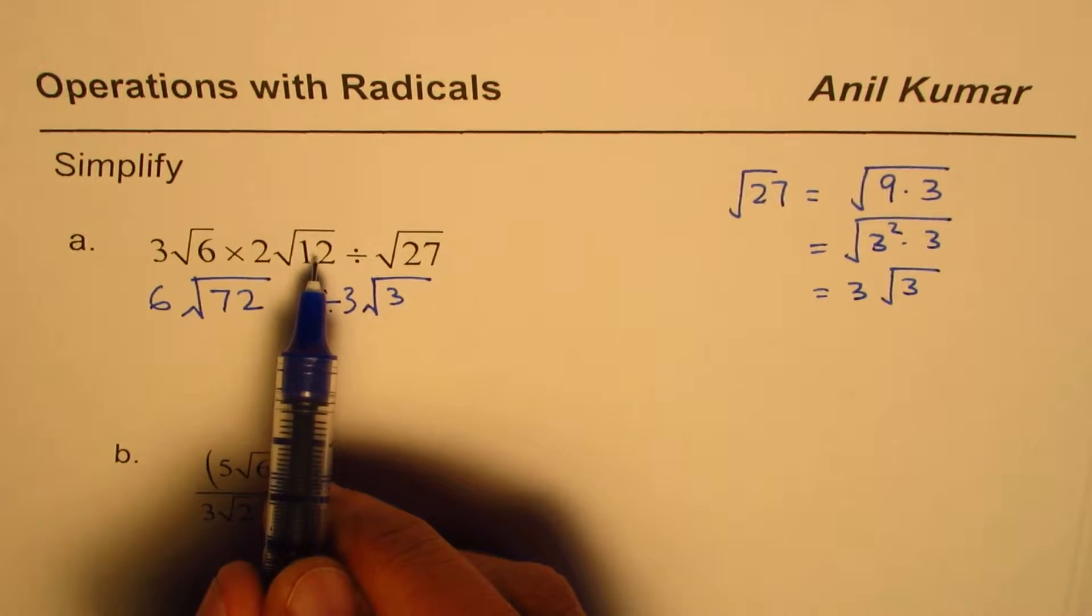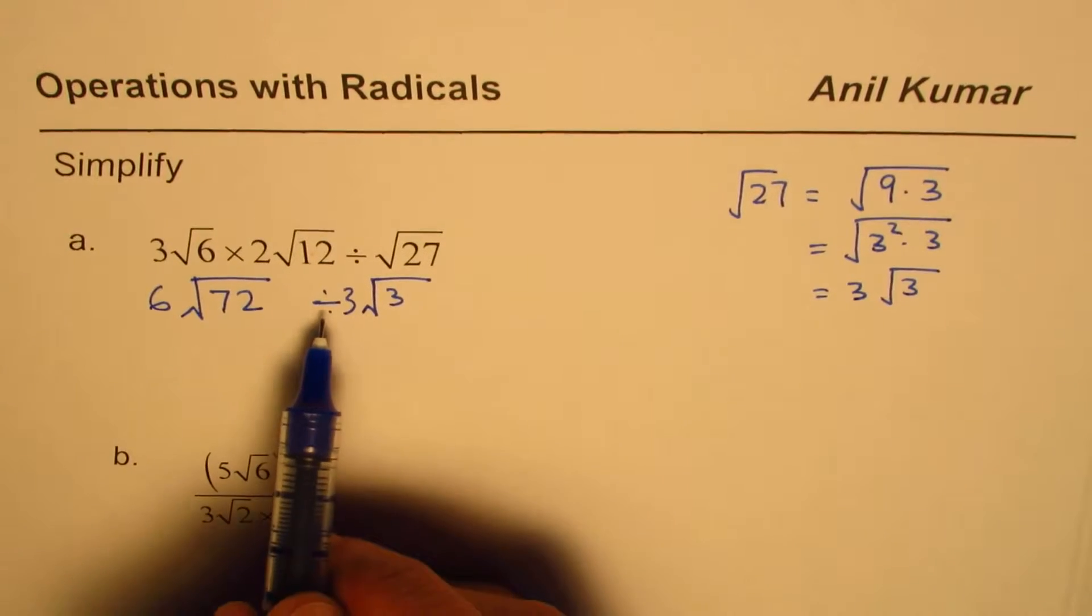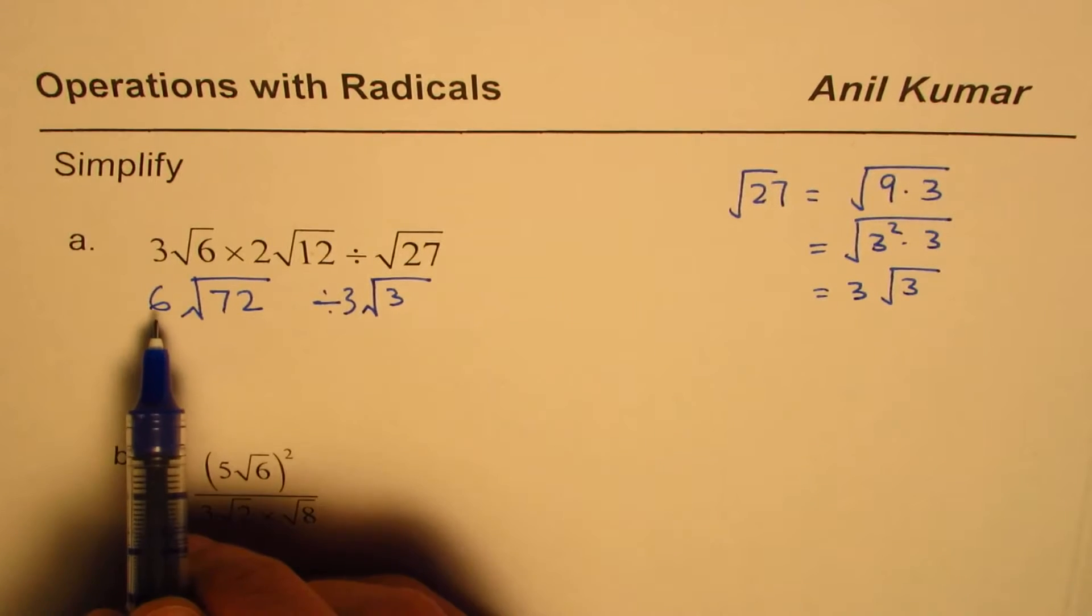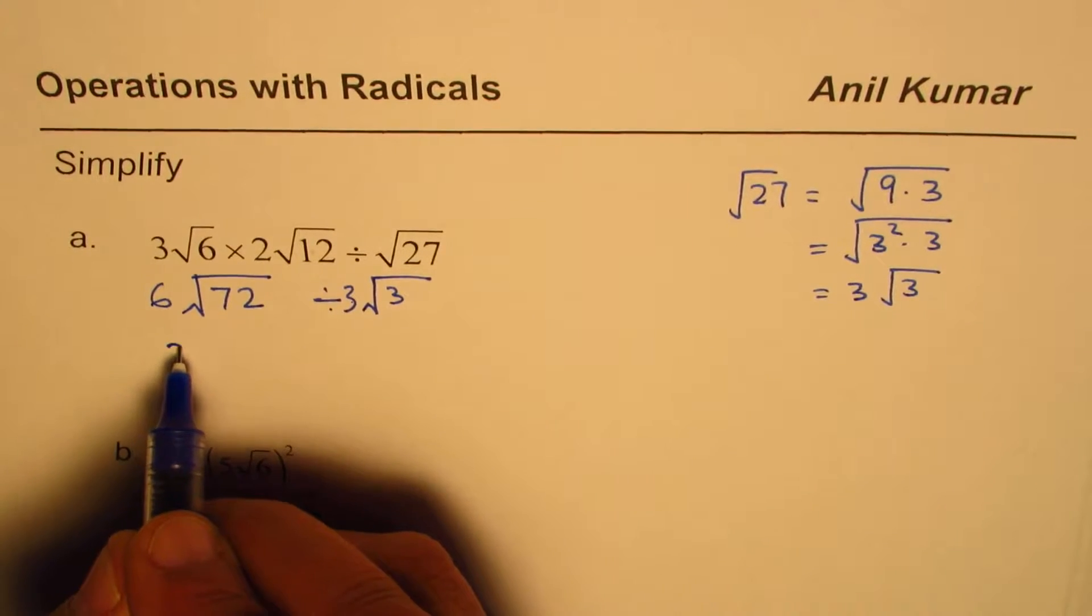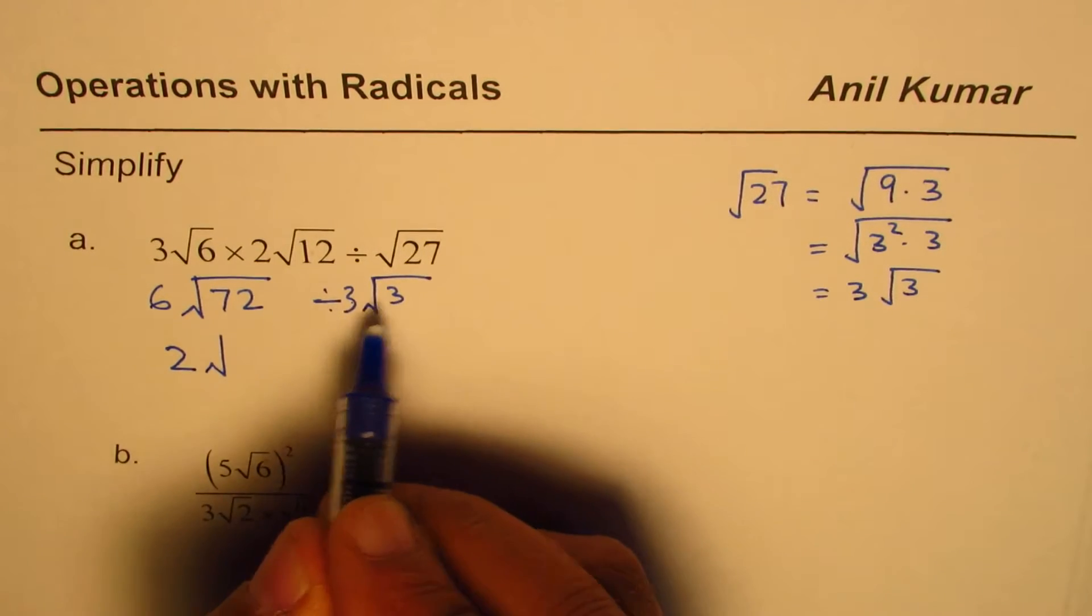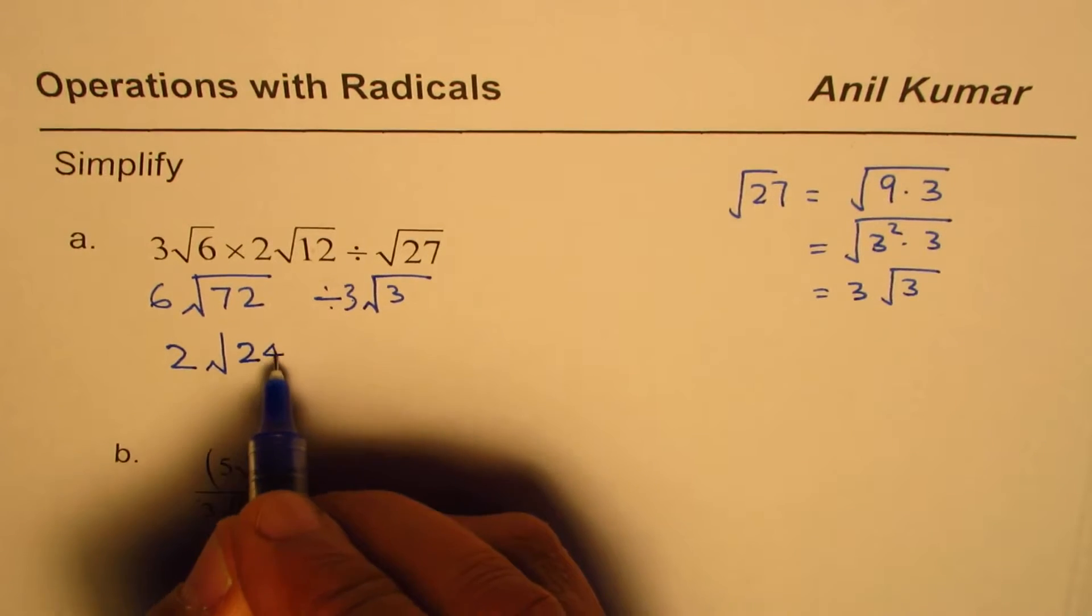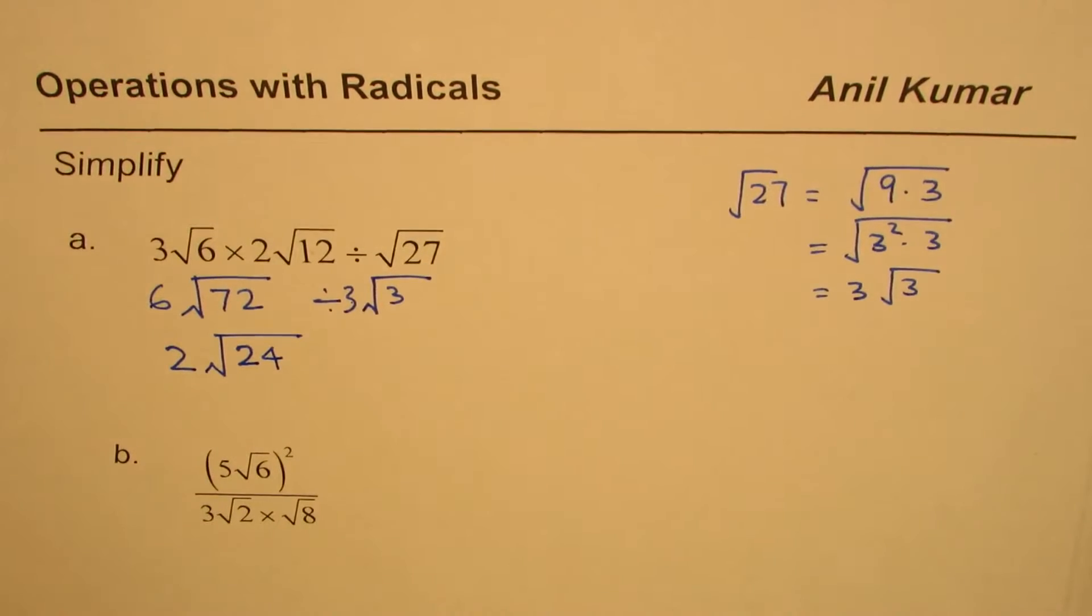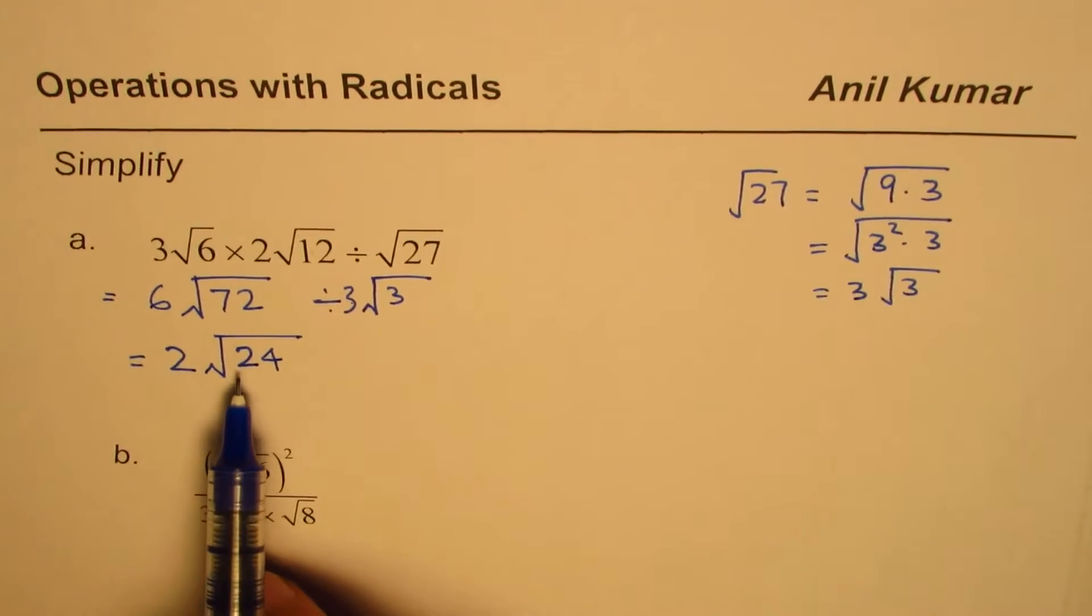So we have 6 divided by 3 which is 2, and then we have 72 divided by 3. Dividing this by 3: 3 times 2 is 6, and 12 gives us 4, we get 24. So that is what we get.